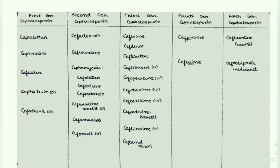The second generation cephalosporins are cefaclor, cefuroxime, cephamycins like cefotetan, cefoxitin, and cefmetazole. Cefuroxime axetil, cefamandole, and cefprozil are also included. Of all these, cefaclor, cefuroxime axetil, and cefprozil are orally given.